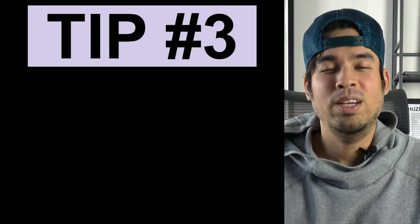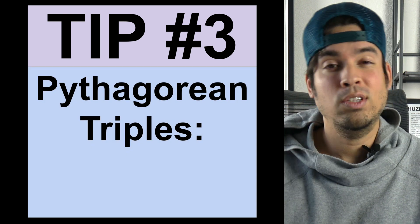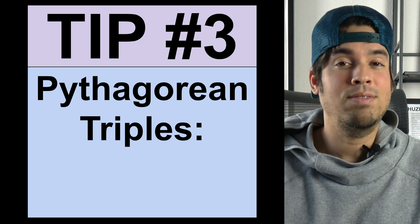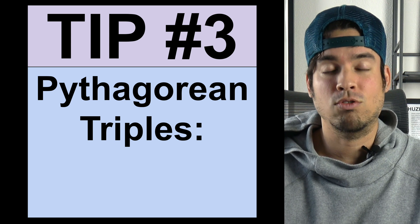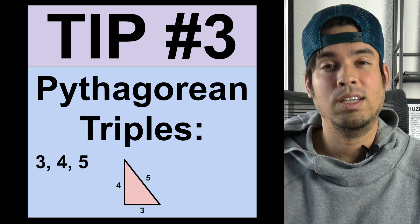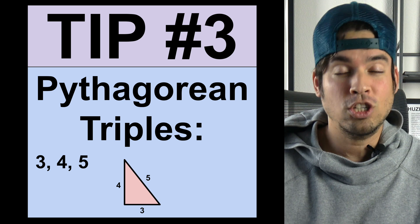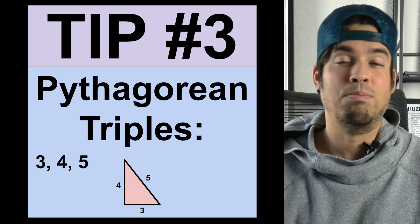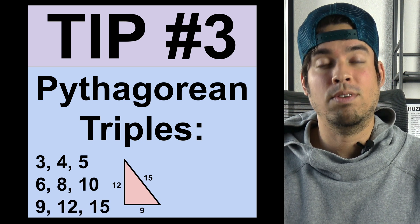Tip number three is to know the following Pythagorean triples. You don't need to know these because if you know the Pythagorean theorem you can derive these values regardless, but it will save you a little time if you do have these down. For example, 3-4-5 is a very common Pythagorean triple that is tested — but not just 3-4-5. Don't forget the multiples will also show up, for example a 6-8-10 or a 9-12-15.